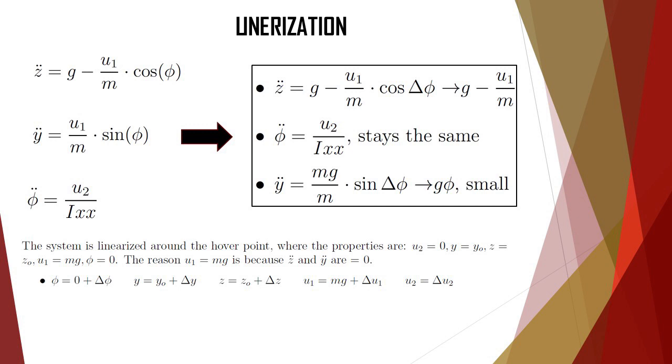The reason why the sine and the cosine disappear is because cosine of a small angle is equal to 1 and sine of a small angle is equal to just the angle itself.